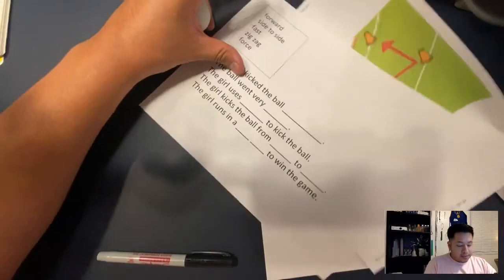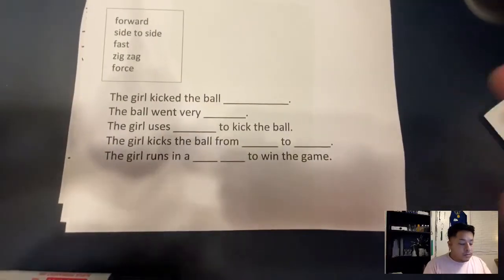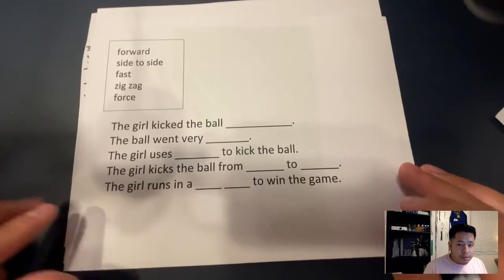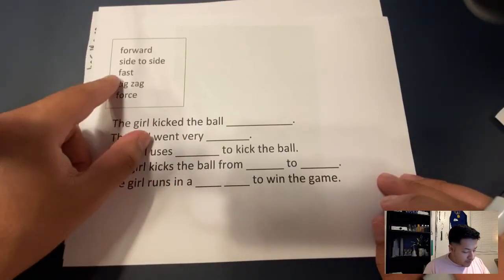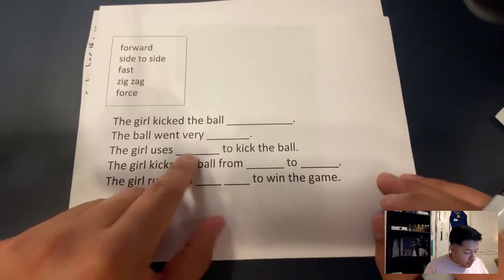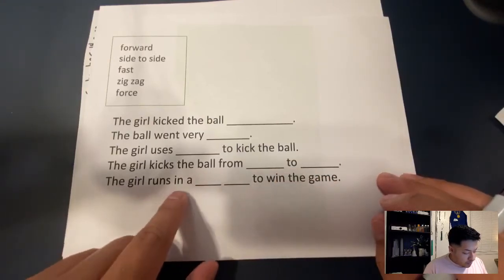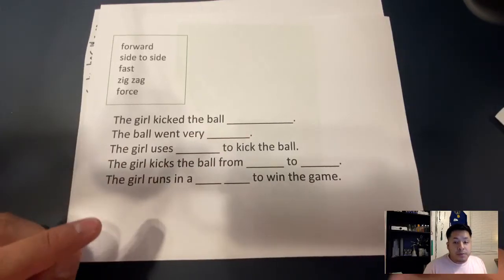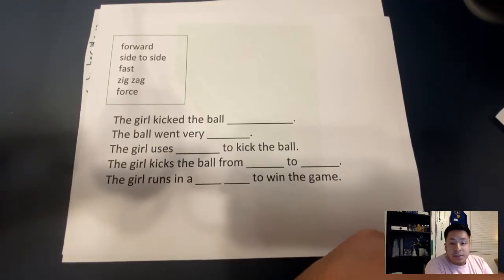Moving on, we have a couple of sentence starters. I want you guys to look at this — zoom in a little bit. It says: the girl kicked the ball fast. The ball went very fast. The girl uses force to kick the ball. The girl kicks the ball from side to side. And the girl runs in a zigzag to win the game, or kicks the ball forward. So I want you guys to write down these sentences the best that you can. We've been talking about position, how we can change our position, motion, and things that are moving.